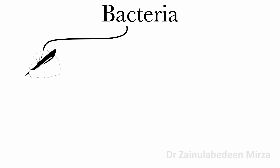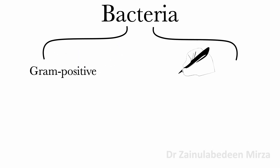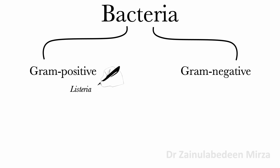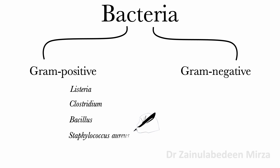Bacteria are divided into gram-positive and gram-negative. There are many gram-positive bacteria, such as Listeria, Clostridium, Bacillus, Staphylococcus aureus, and others.